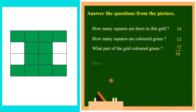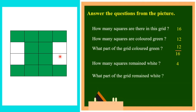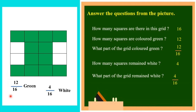Next question: how many squares remain white? Counting 1, 2, 3, 4 — these 4 squares remain white. What part of the grid remained white? Totally there are 16 parts and out of 16 parts, 4 parts remain white. So we can say 4 parts out of 16 equal parts remain white, that is 4 by 16. So at last we can conclude that 12 by 16 green and 4 by 16 white.